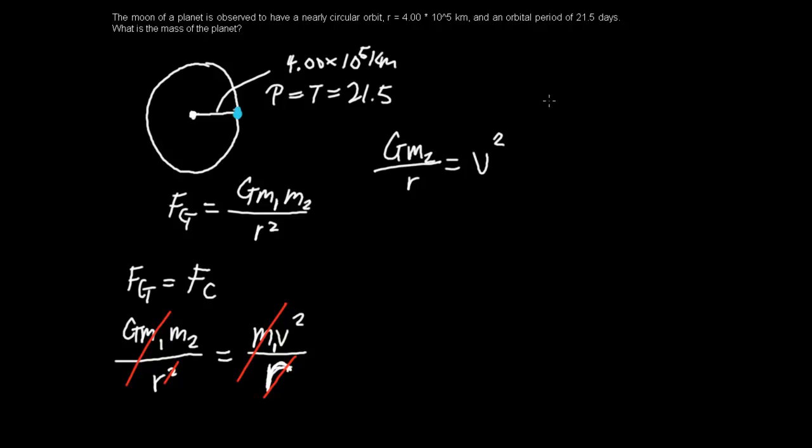Alright, we've hit a problem here. We don't know what v is at all. But however, we can calculate v by using another equation. This equation is your centripetal velocity. Your centripetal velocity is 2πr over your period, or let's make it t. Alright, that's your centripetal velocity.